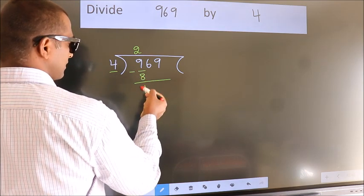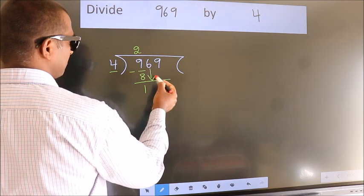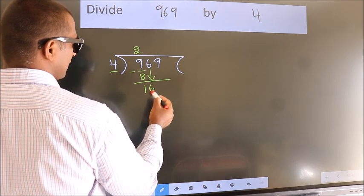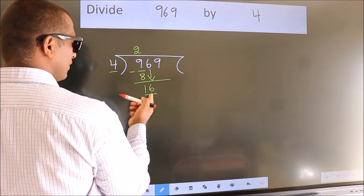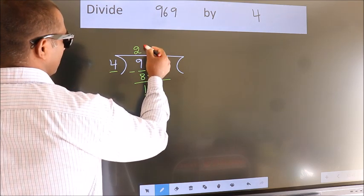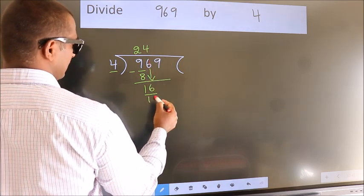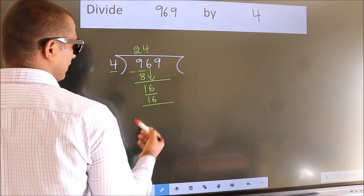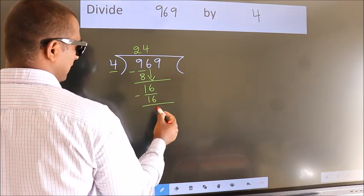After this, bring down the beside number. So 6 down, giving us 16. When do we get 16 in the 4 table? 4 times 4 equals 16. Now we subtract. We get 0.